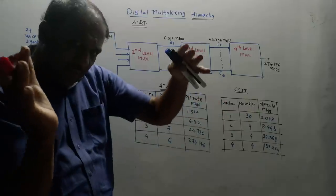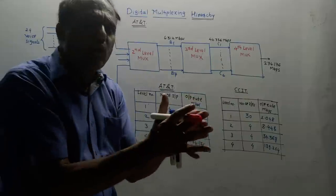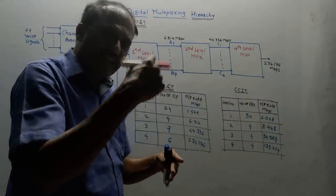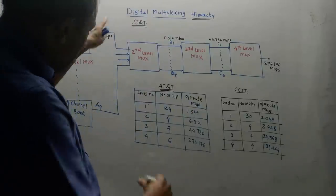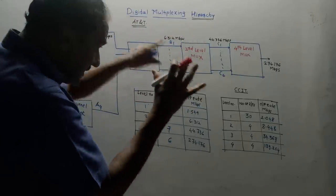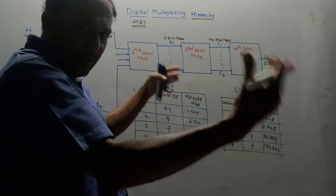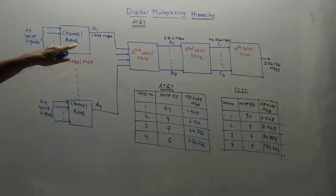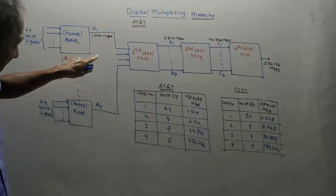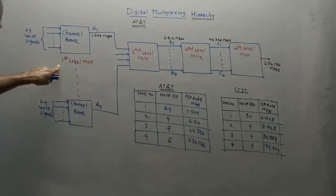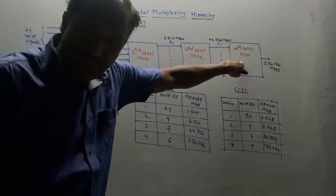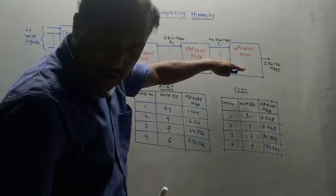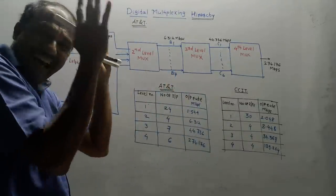The multiplexing hierarchy means many multiplexing levels are combined together, and then the data is transmitted through a high-speed transmitting medium. Looking at the AT&T block diagram, four levels of multiplexing are used: first level of multiplexing, second, third, and fourth level of multiplexing. This is called multiplexing hierarchy. The CCIT block diagram is similar.